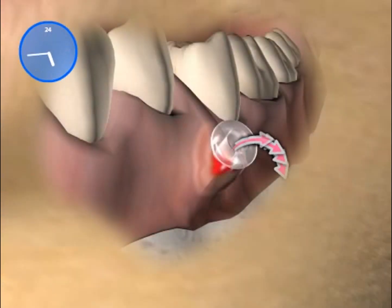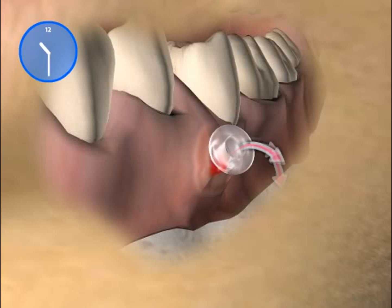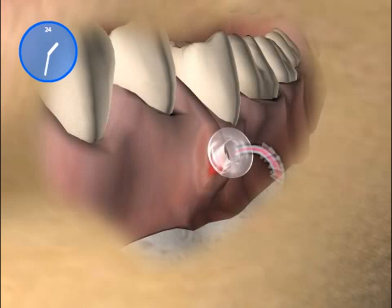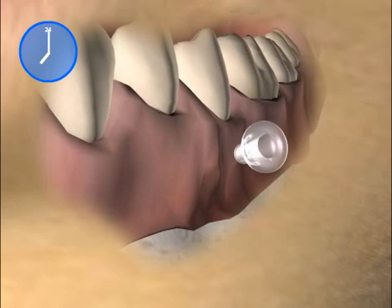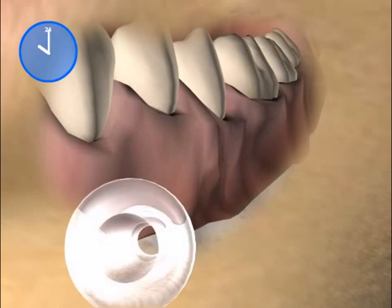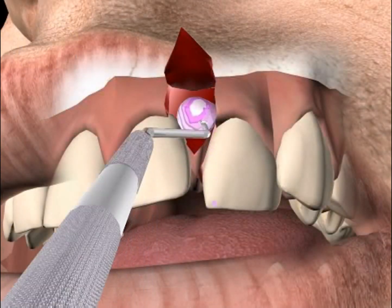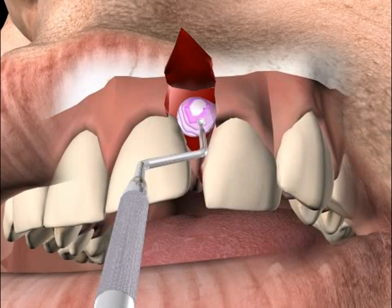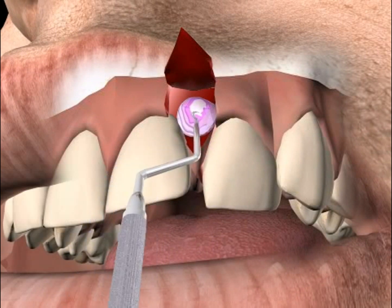In this way the cyst will get smaller and smaller over months. Think of it much like a balloon from which you let the air out bit by bit. When the cyst or the balloon will have reached a certain size, the cystectomy can then take place. Cystectomy is the removal of the cyst. You can find out more about it in the video by the same name.